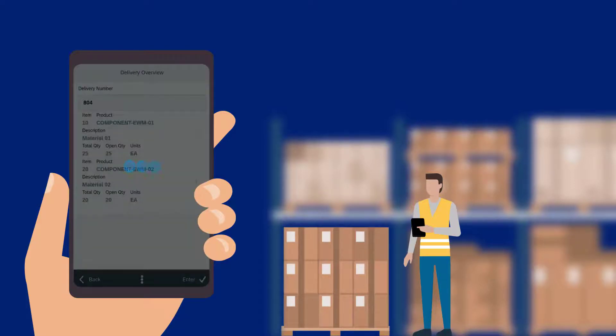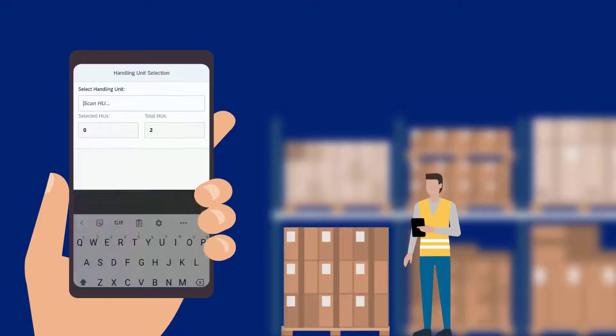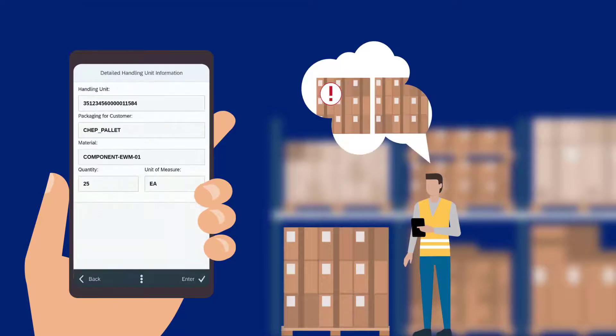Now that the operator knows the right product has arrived, they proceed with scanning the HU label and quickly realise that the quantity received in the shipment is less than the delivery amount. They also notice that one of the boxes is slightly damaged.